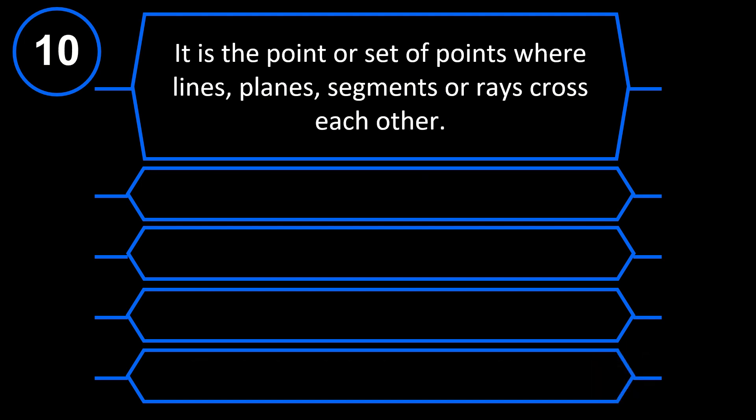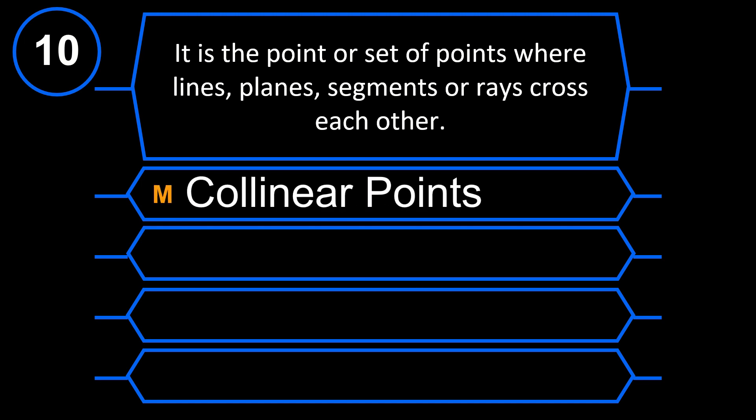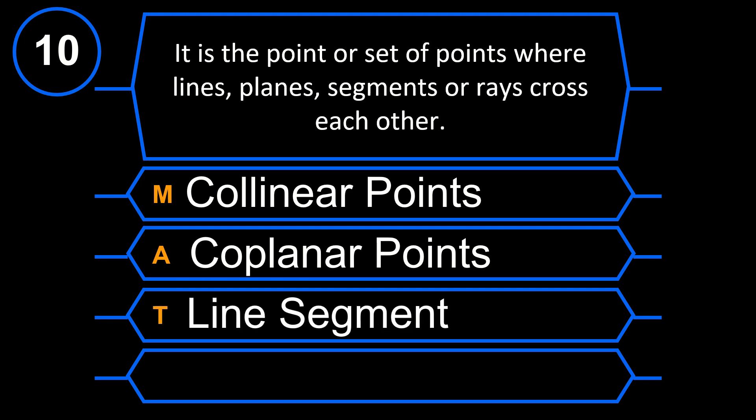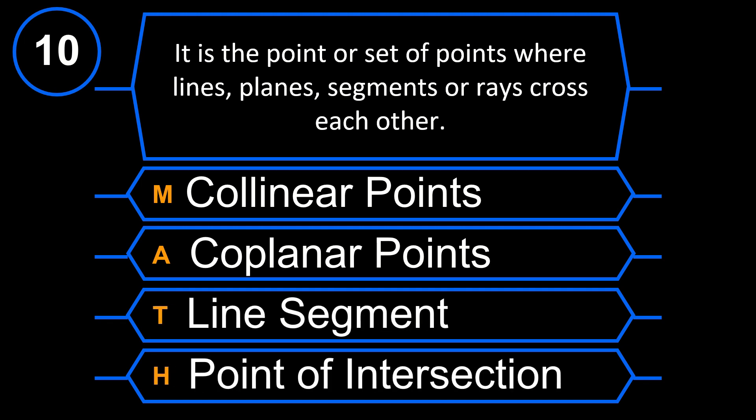And finally, for question number 10: It is the point or set of points where lines, planes, segments, or rays cross each other. M. Collinear Points. A. Coplanar Points. T. Line Segment. H. Point of Intersection.